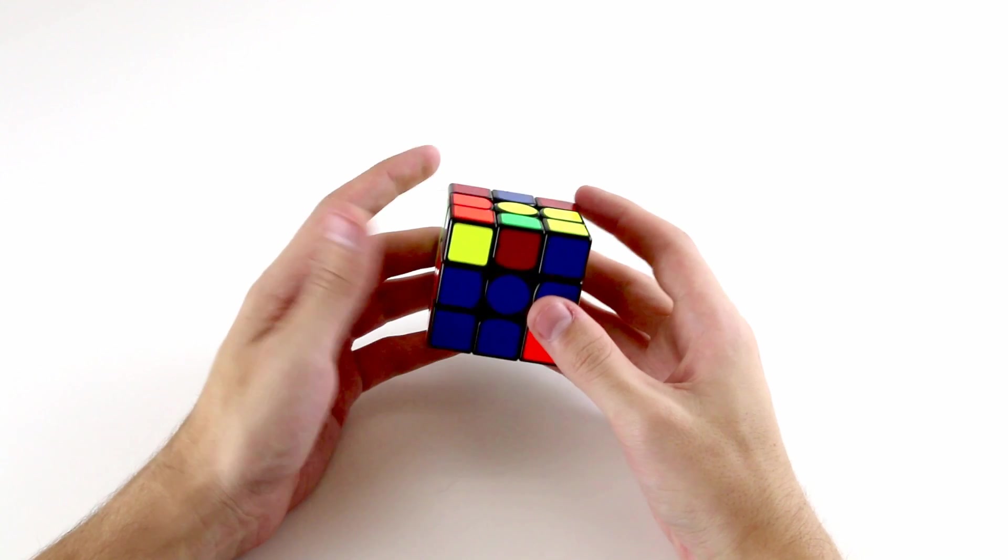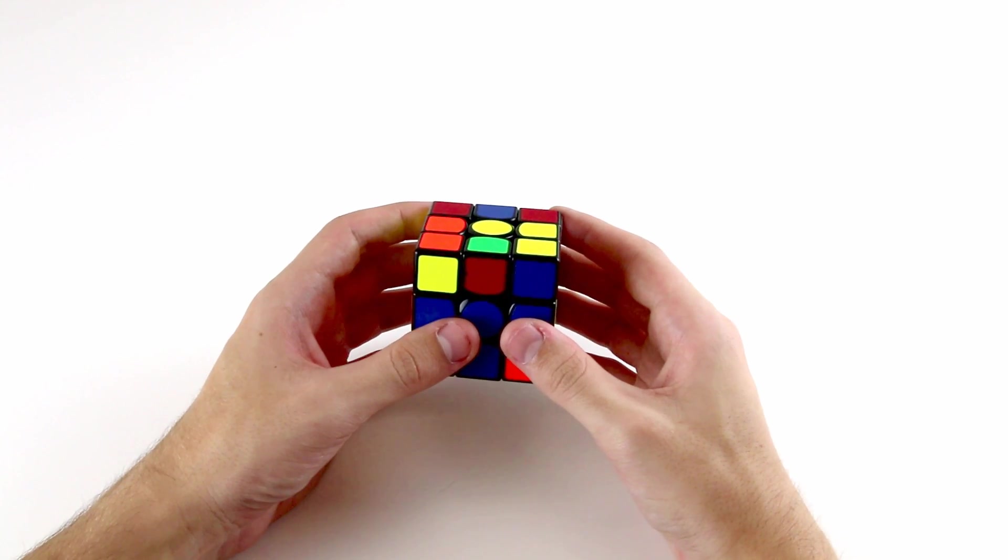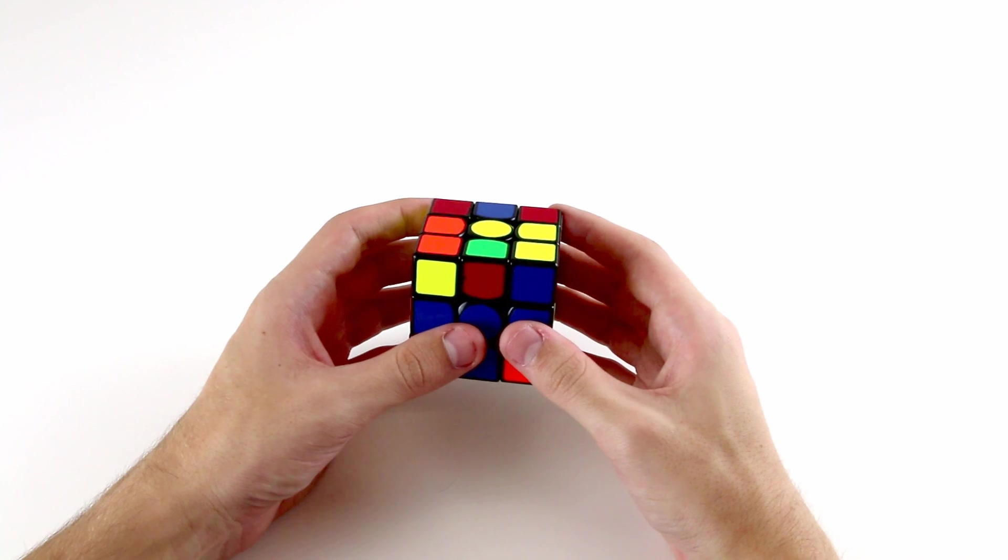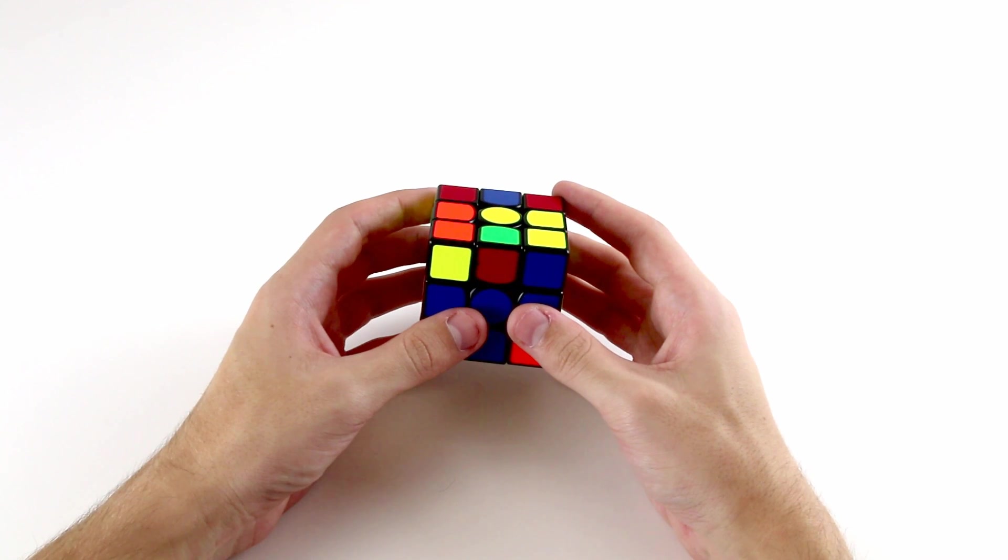Planning out the entire cross and first F2L pair in inspection can be quite challenging, but world-class speedcubers would do it almost every solve. Here are some tips to help you practice planning out your cross and your first F2L pair in inspection.